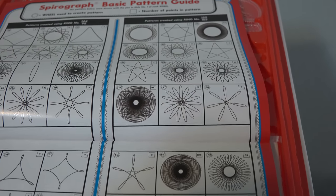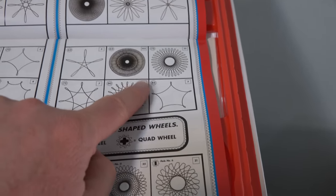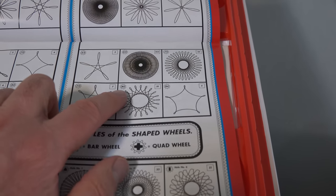Rereading the instructions. It turns out we've been doing it incorrectly. Can you believe that? Shocking. It turns out that you don't use hole number 21 with this. With all of these you use hole number 1. So it is ring number 150 and wheel number 80. Hole number 1.